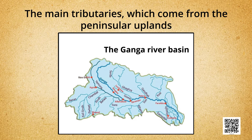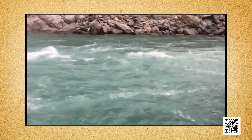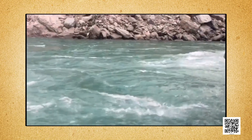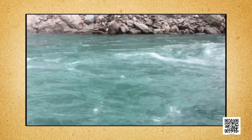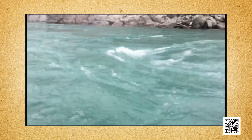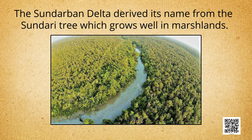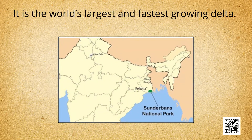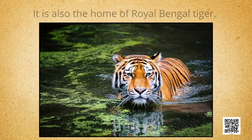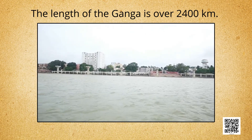Enlarged with waters from its right and left bank tributaries, the Ganga flows eastwards till Farakka in West Bengal — the northernmost point of the Ganga Delta. The river bifurcates here. The Bhagirathi-Hooghly flows southwards through the deltaic plains to the Bay of Bengal. The main stream flows southwards into Bangladesh and is joined by the Brahmaputra; further downstream it is known as the Meghna. The delta formed by these rivers is called the Sundarban Delta, which derives its name from the Sundari tree. It is the world's largest and fastest growing delta and also the home of the Royal Bengal Tiger. The length of the Ganga is over 2,400 kilometers.